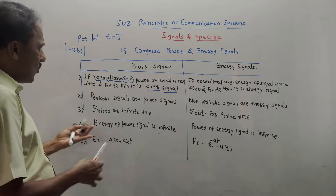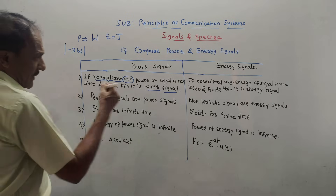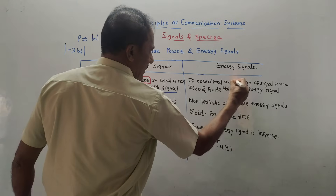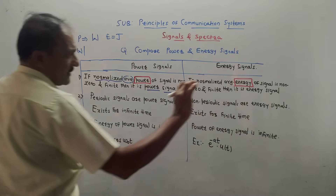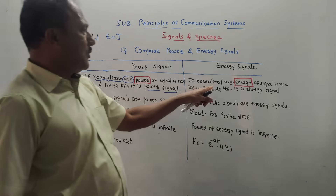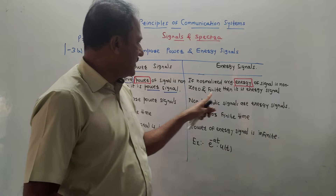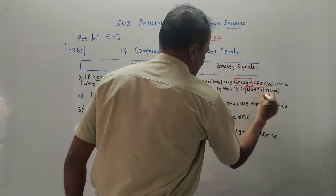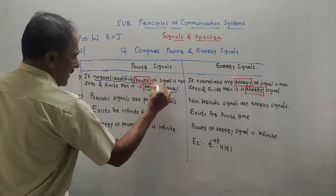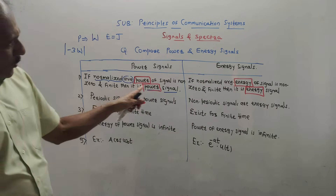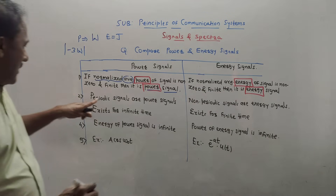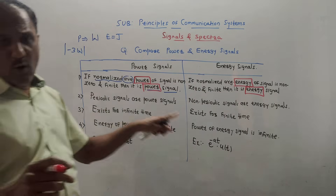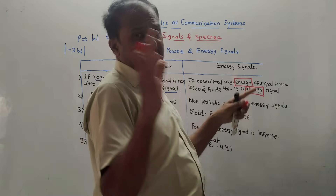Similarly, the definition of an energy signal: just make a slight change in the definition — in place of the word 'power,' use the word 'energy.' So, if the normalized average energy of a signal is non-zero and finite, then it is an energy signal. That is the only difference in the definition.